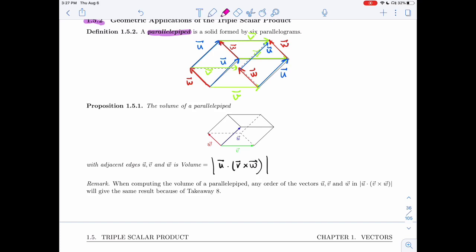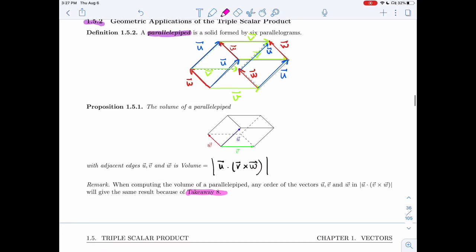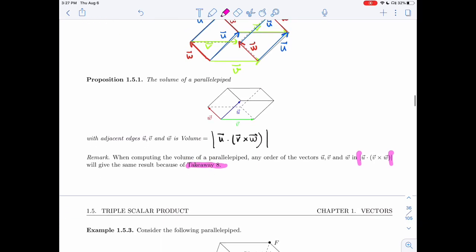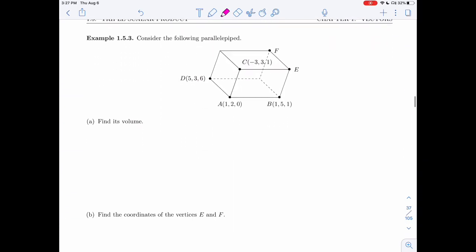One thing that will ease your mind is when you're computing the volume of the parallelepiped, the order of U, V, and W doesn't matter, so there's no way of picking the first edge, the second edge, and the third. This is because of takeaway eight. Takeaway eight told us that if we switch two in the triple scalar product, we get an extra minus, while the absolute value will get rid of that extra minus.